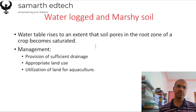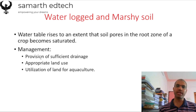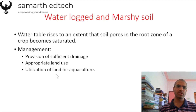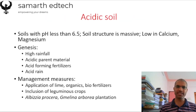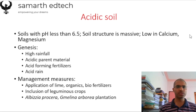Waterlogged and marshy soils develop when the water table rises and reaches the soil surface, covering the entire soil with water. Management techniques include providing sufficient drainage, appropriate land usage, and utilizing the land for aquaculture. These are the various techniques to solve this physical problem.